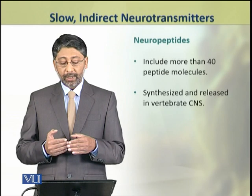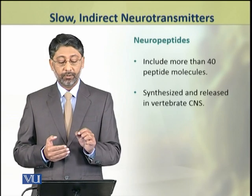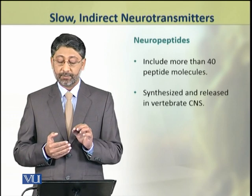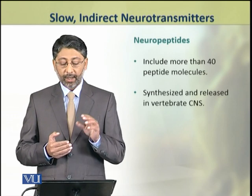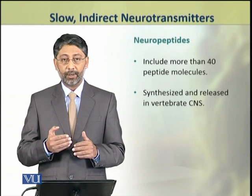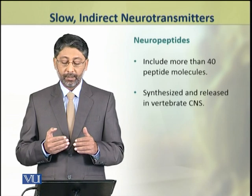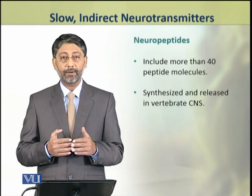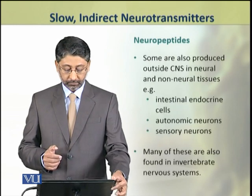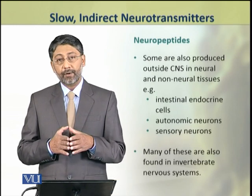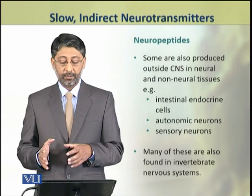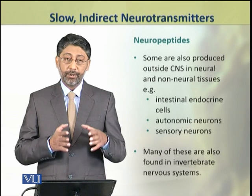Now we shall discuss neuropeptides, the second group involved in slow and indirect neurotransmission. There are about 40 or more neuropeptides involved in neurotransmission, synthesized and released in the vertebrate central nervous system. Some neuropeptides are also produced outside the CNS by non-neural tissues.